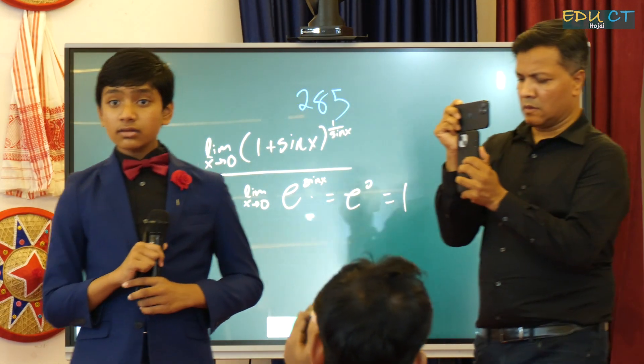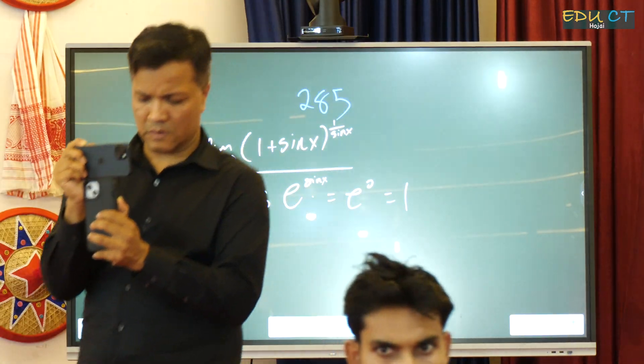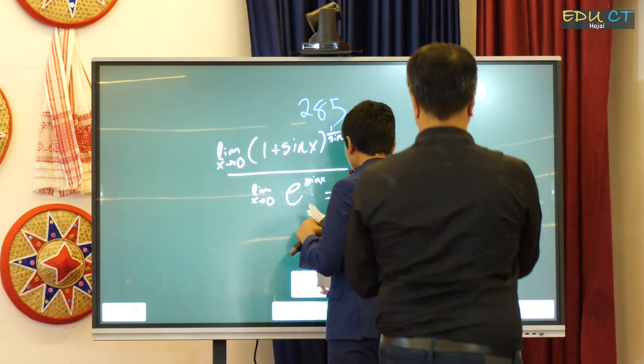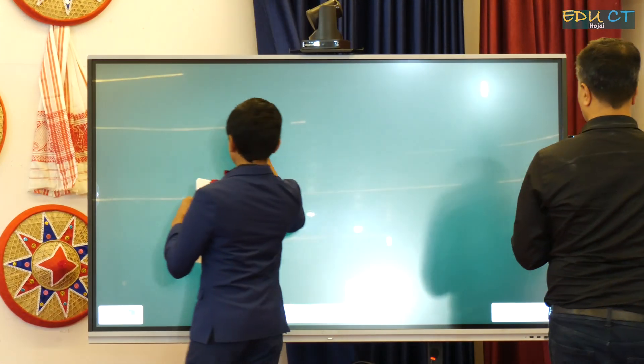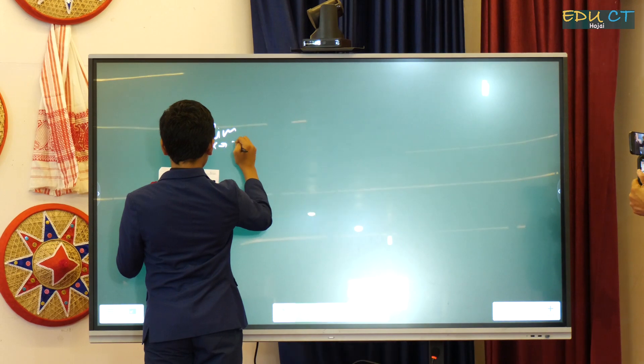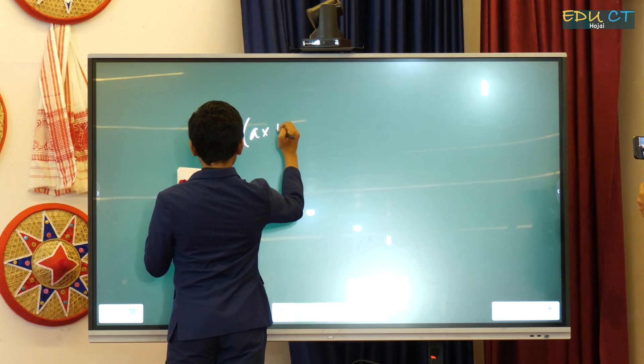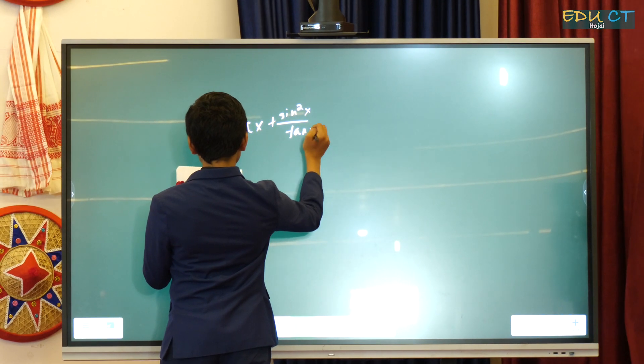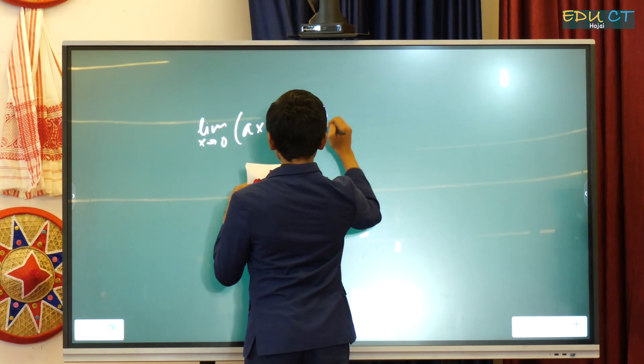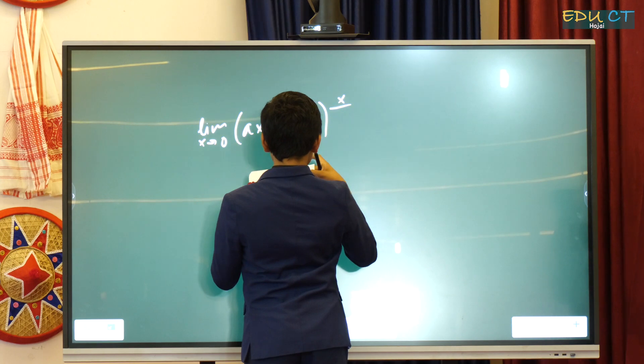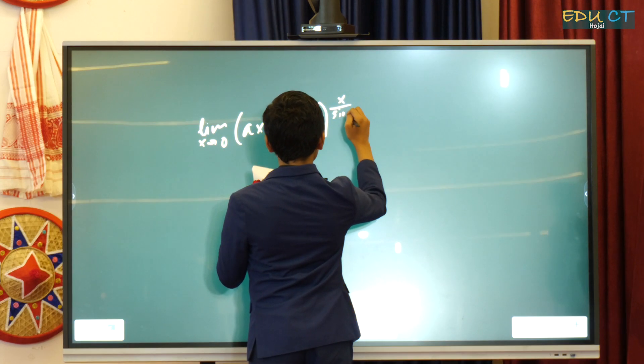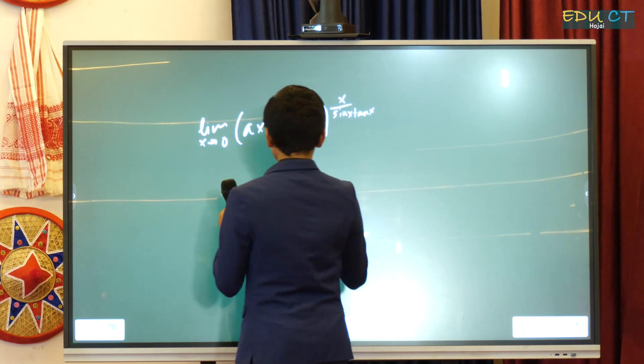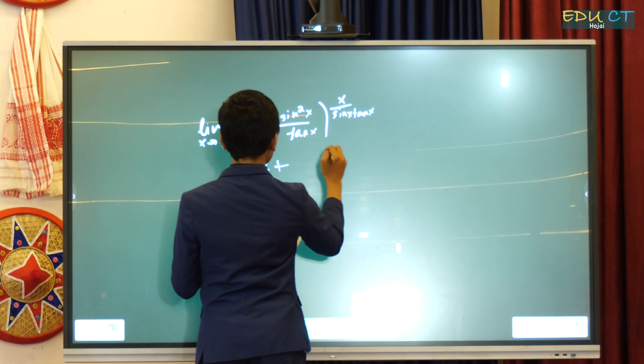Really? Okay. So, harder question that I don't think is possible for me to solve. We get limit as x approaches 0 of ax plus sin squared x over tan x to the x over sin x tan x. This is a very bizarre integral, but let me see if I can simplify anything.